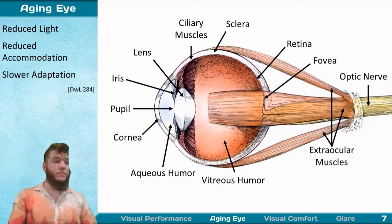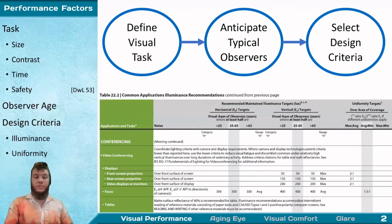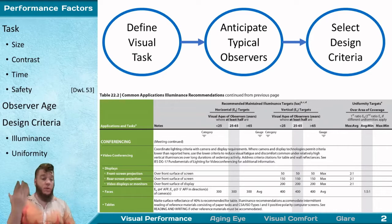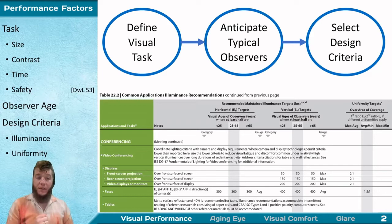The age of your typical observer is a key aspect when determining design criteria. If designing for older observers, you need to provide more light and more uniform light. This is reflected in IES design guide tables, which provide specific illuminance criteria associated with particular visual tasks. Factors that feed into those criteria include size, contrast, time, and safety-related concerns.